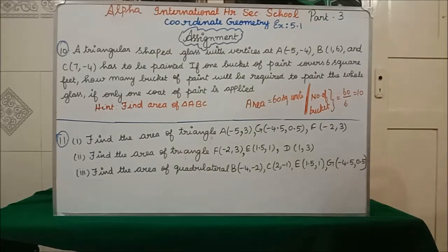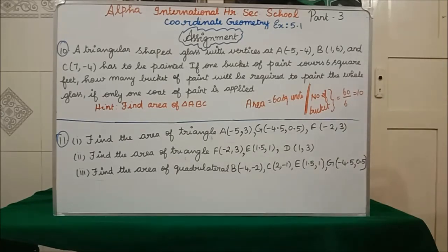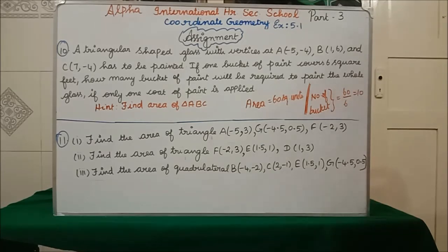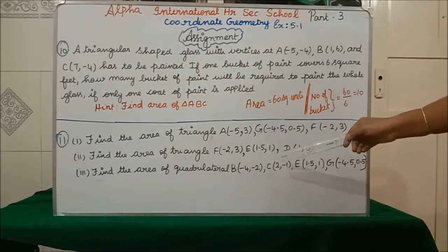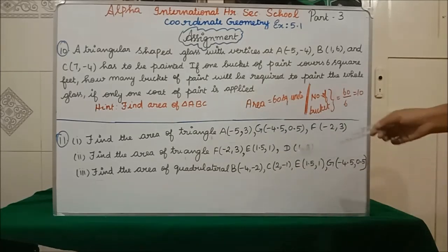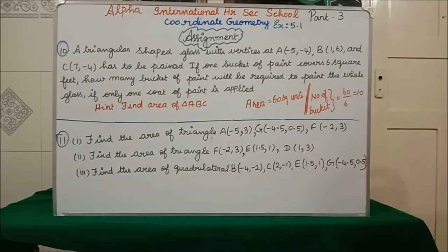For the 11th question, find the area of the triangle with given vertices. First plot the values in the graph, draw the anti-clockwise direction, write in the column, then do cross multiplication to get area of triangle AGF. Similarly find area of second sub-region EGD and third sub-region BCE. With this, Exercise 5.1 is completed. In the next Part 4 session I will see you in the new exercise. Thank you students.